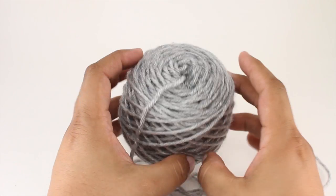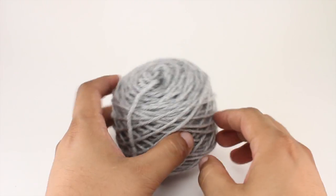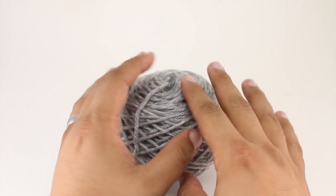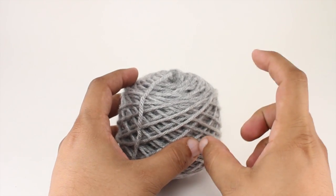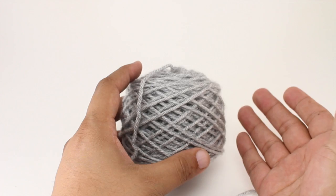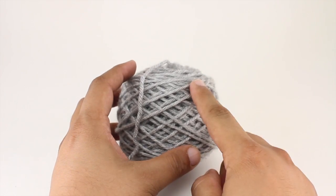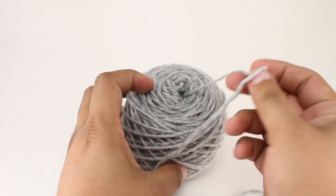But you don't always have a ball winder nearby, or sometimes you need to wind just a small section of yarn for, say, an intarsia project. So I'm going to show you a couple different ways that you can wind a ball that pulls from the center by hand.